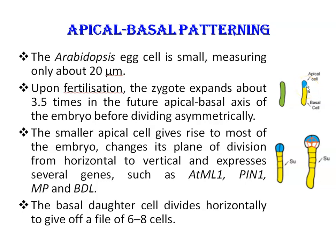The smaller apical cell gives rise to most of the embryo, changes its plane of division from horizontal to vertical, and expresses several genes such as ATML1, PIN1, MP, and BDL that are not expressed in the basal daughter cells. The basal daughter cell divides horizontally to give a file of six to eight cells, which all but the hypophysis constitute the extra-embryonic suspensor. Apical-basal polarity of the embryo becomes apparent with the establishment of the hypophysis at the basal end of the octant pro-embryo.